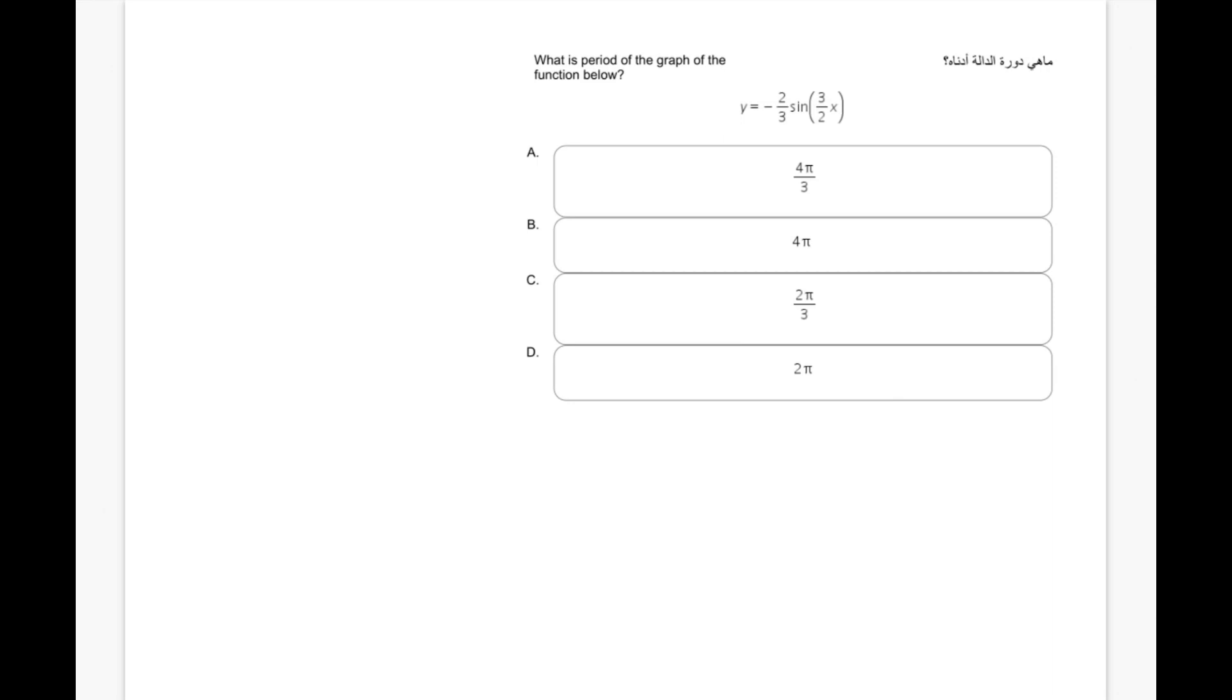Now for such a function, we do have a general formula which says that first of all, write down the general formula which is f of x equals a sine b of x plus c. Now this represents the parent function for such similar functions where we have a to be in this case minus 2 over 3 and b is 3 over 2. Now we do have the formula for the period to b. You need to memorize this at least. The period equals 2π over b.